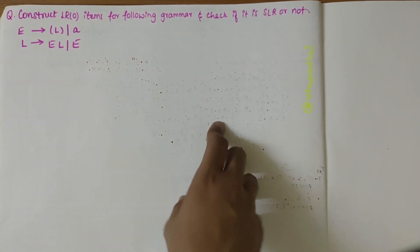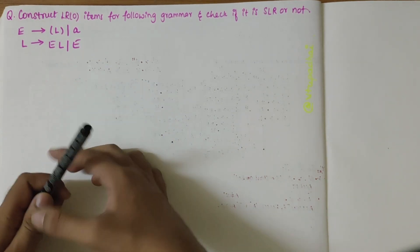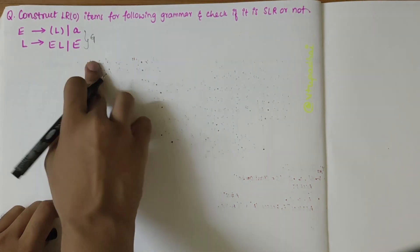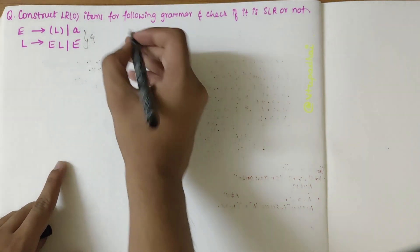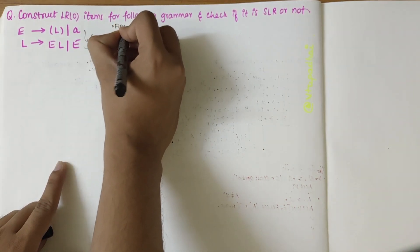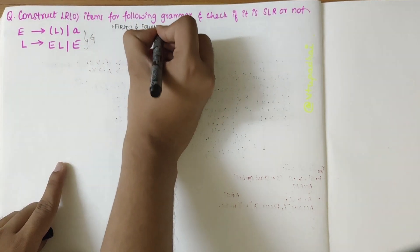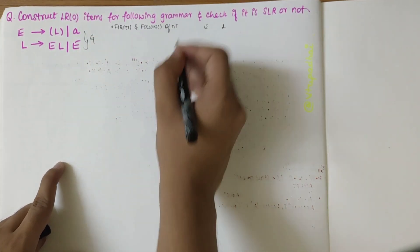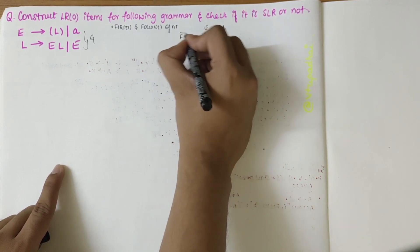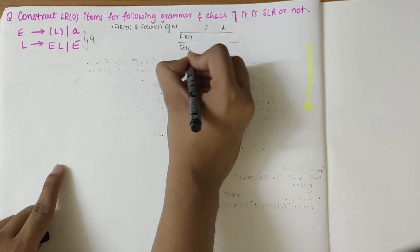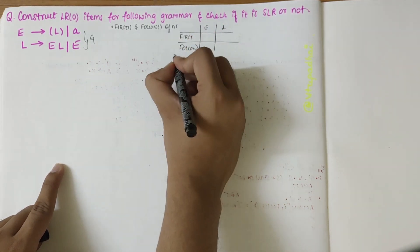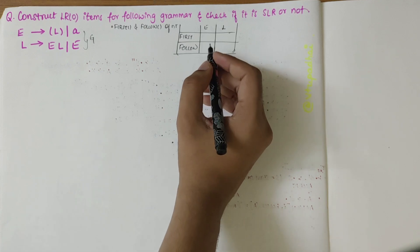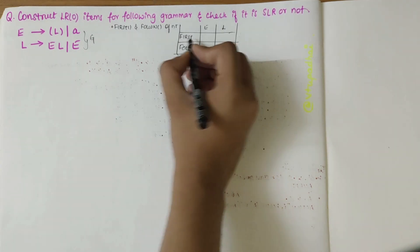In this video we'll be constructing LR0 items for the given grammar and check if the grammar is SLR or not. The grammar given is G. Before moving on to the construction of LR0 items, we need to find First and Follow of the non-terminals. The non-terminals are E and L. If you want to know how to find First and Follow, do watch my previous videos where I've explained the algorithm and steps.